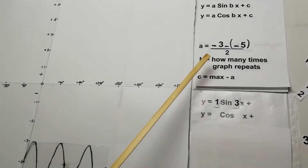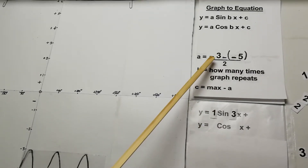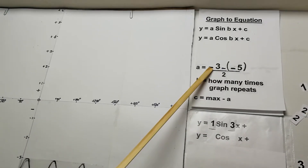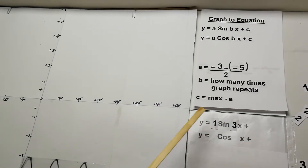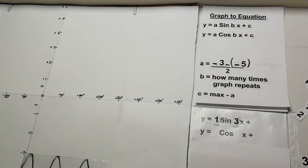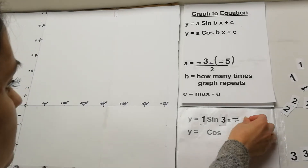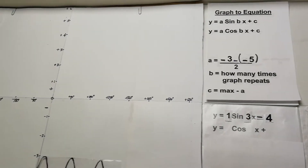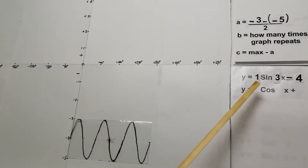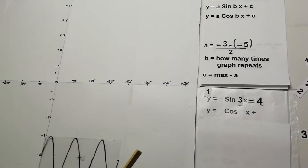For the c value we take the maximum, which is negative 3, and subtract the a value of 1: negative 3 minus 1 = negative 4. So the equation of the graph is y = sin(3x) − 4. We don't normally write the coefficient of 1 explicitly.